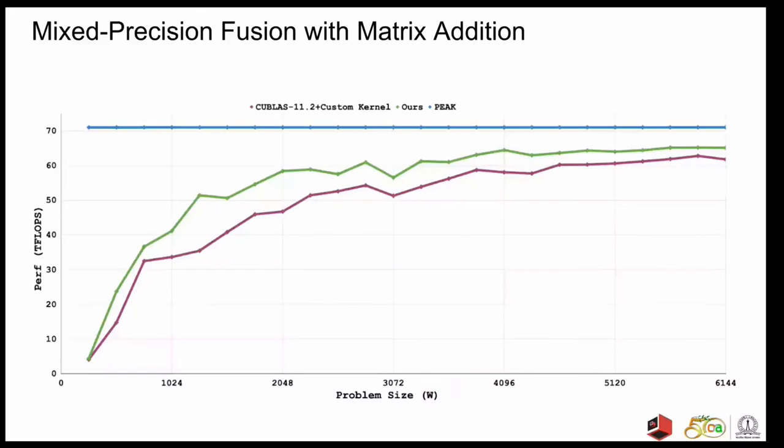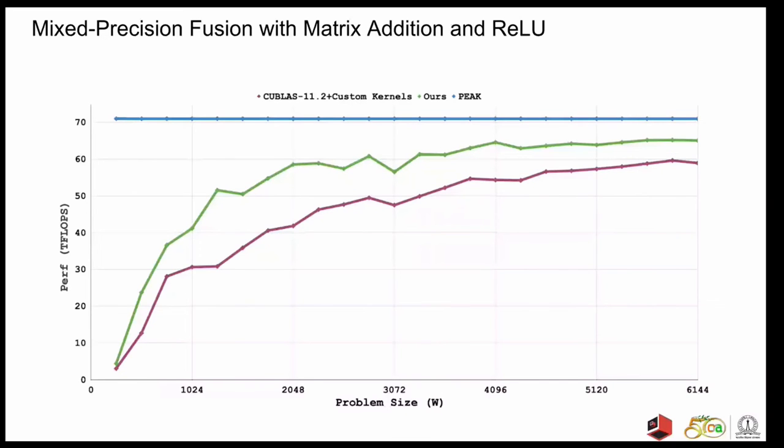As we go on to add more kernels which are candidates for fusion, we see more improvement. When ReLU is also added to the list of operations that follow matmul, we see more performance improvements that go up to 1.50x.